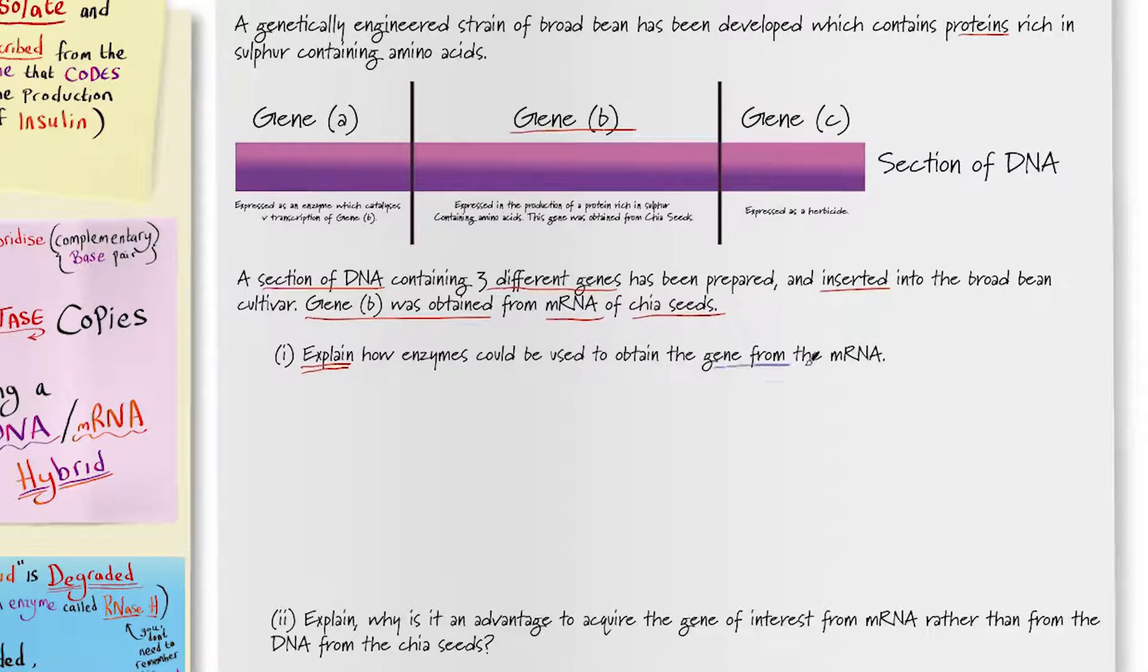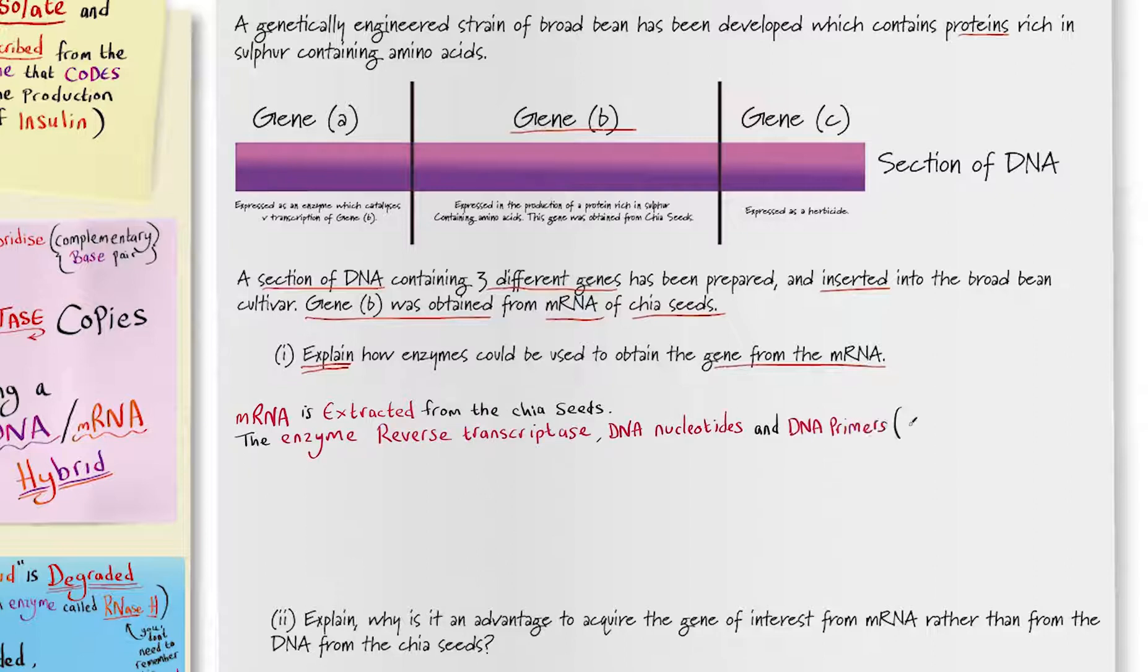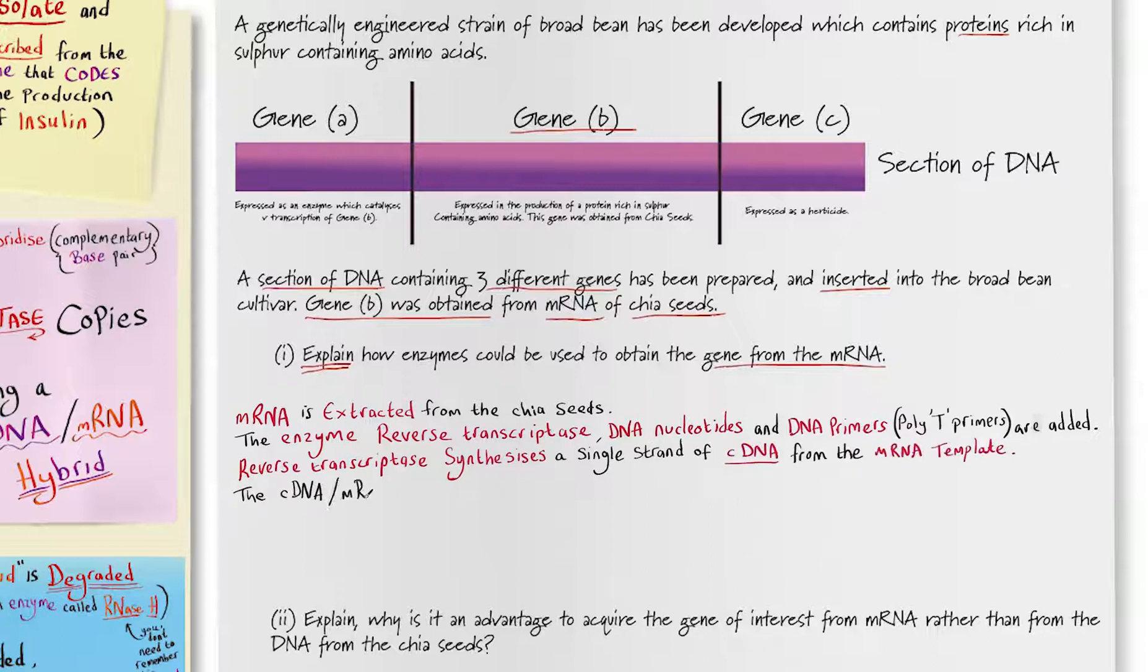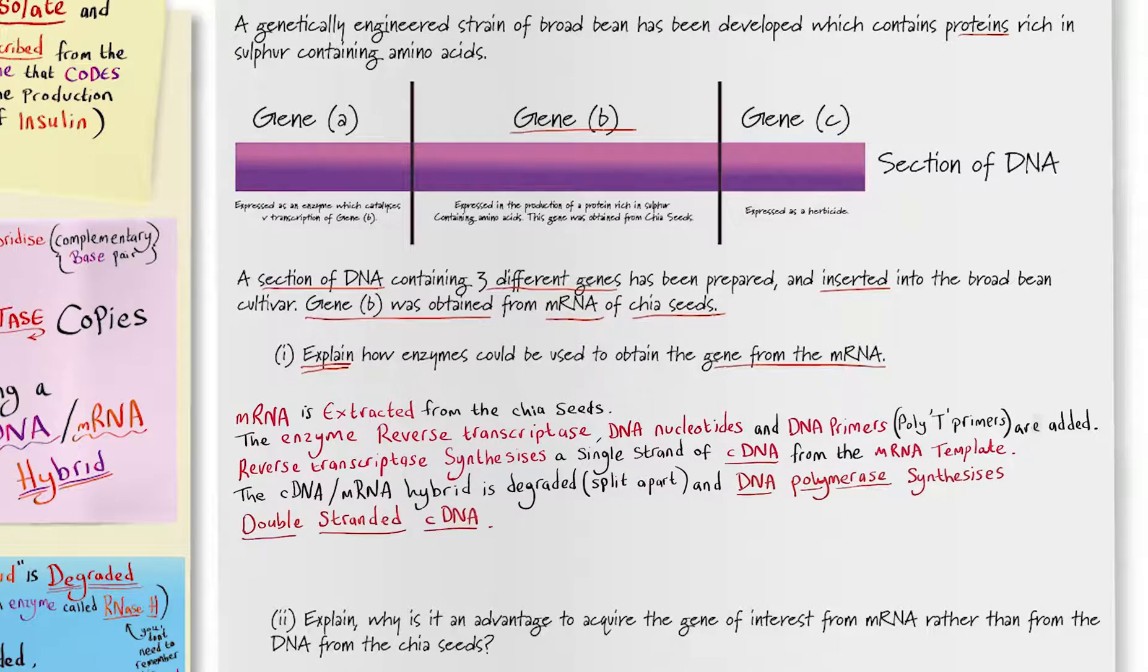As outlined in this revision session the key points that you must say are messenger RNA is extracted from the chia seeds. The enzyme reverse transcriptase, DNA nucleotides and DNA primers or poly T primers are added. Reverse transcriptase synthesizes a single strand of complementary DNA from the messenger RNA template. The complementary DNA messenger RNA hybrid is degraded and split apart and DNA polymerase synthesizes double-stranded complementary DNA.